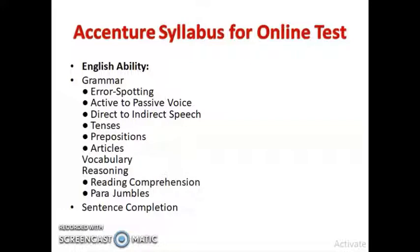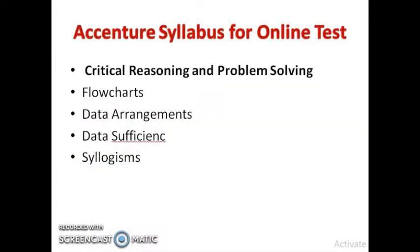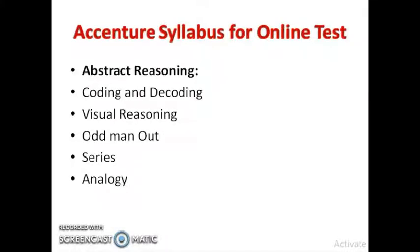For the stage one syllabus: English ability covers grammar topics like error spotting, active to passive voice, direct to indirect speech, tenses, prepositions, articles, vocabulary, reading comprehension, paragraph jumbles, and sentence completion. Critical reasoning and problem solving covers flowcharts, data arrangements, data sufficiency, and syllogisms. Abstract reasoning covers coding-decoding, visual reasoning, odd man out, series, and analogy.